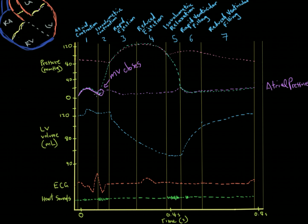Continuing along the atrial pressure line, we actually increase in pressure again. How is that possible? Well, the mitral valve is closed and we are now in isovolumetric contraction of the left ventricle. As the left ventricle contracts, it pushes blood against the mitral valve, which causes the mitral valve to bulge up into the left atrium — it doesn't open, but that bulge increases the pressure in the left atrium.